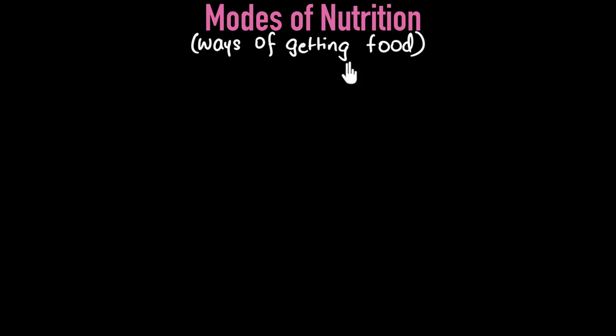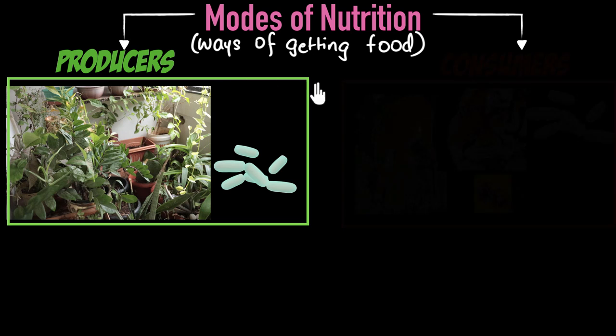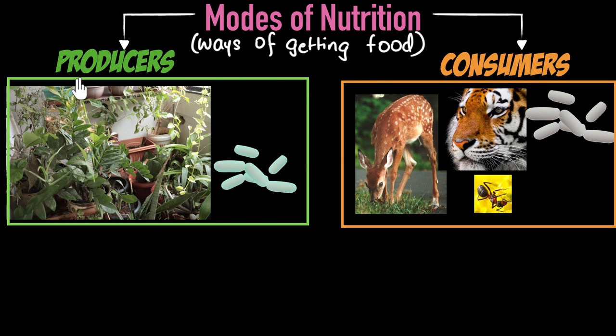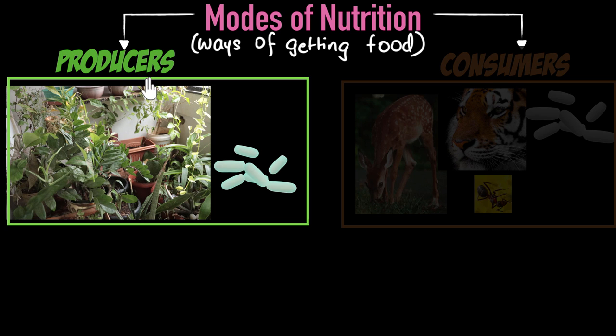Based on how different living things get their food, we can classify them into two categories: producers and consumers. Producers, as the name suggests, are the ones who can produce their own food. Most examples involve green trees and plants and all the green stuff around you, and some bacteria as well. How do they make their own food? They do that by using the energy available from their surrounding. For example, plants can use energy from sunlight to make their own food.